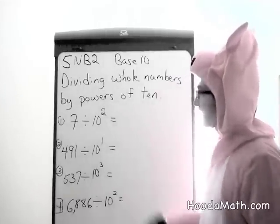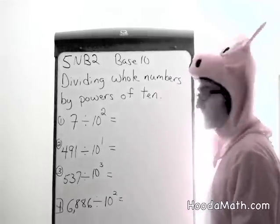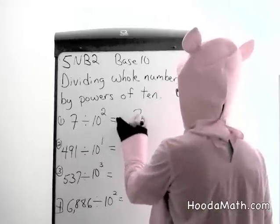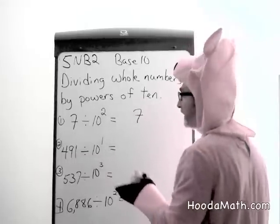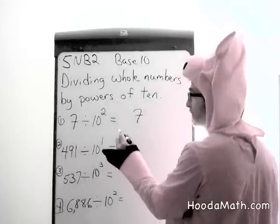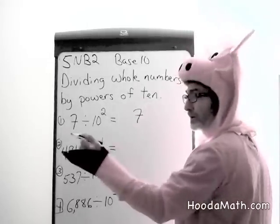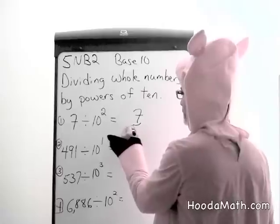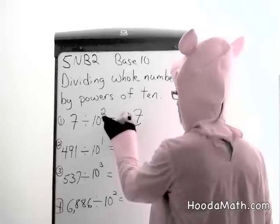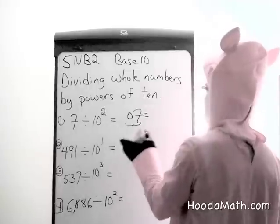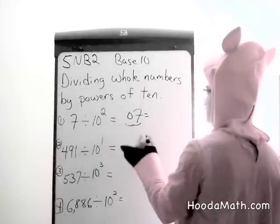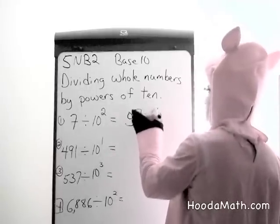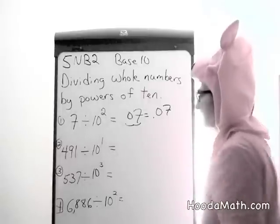In this case, 7 divided by 10 to the second power: we write down 7 and move the decimal place to the left two places — 1, 2. So 7 divided by 10 to the second power is 7 hundredths.